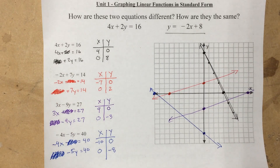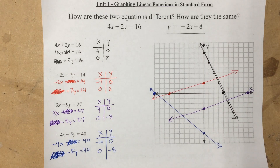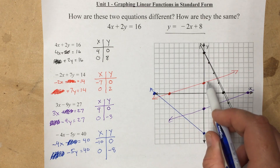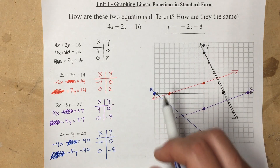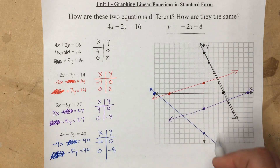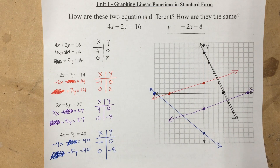So there you go — four equations written in standard form, graphed on the coordinate plane. The key point is to find your x and y-intercepts by plugging in zeros for x or y and figuring out what the other value is. Once you have the x-intercept and the y-intercept, you can just connect those with a straight line. Thank you, bye-bye.